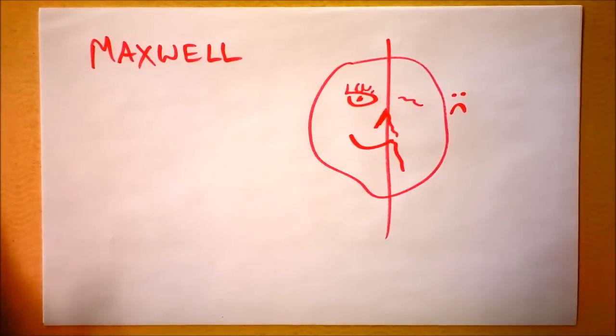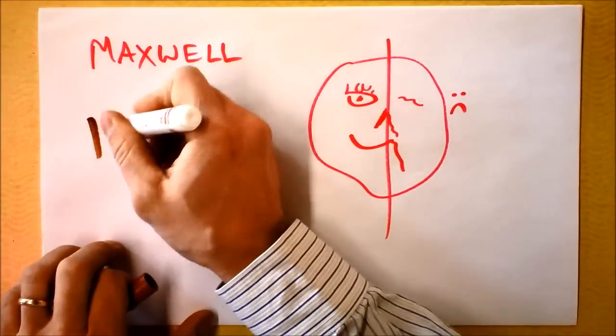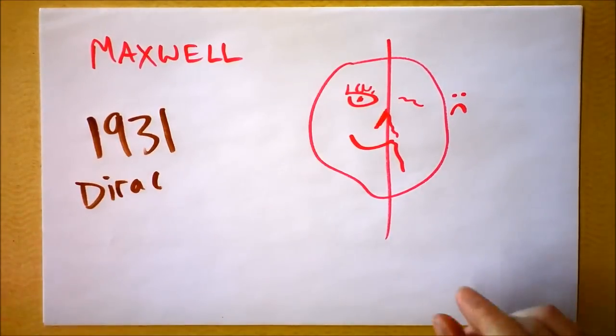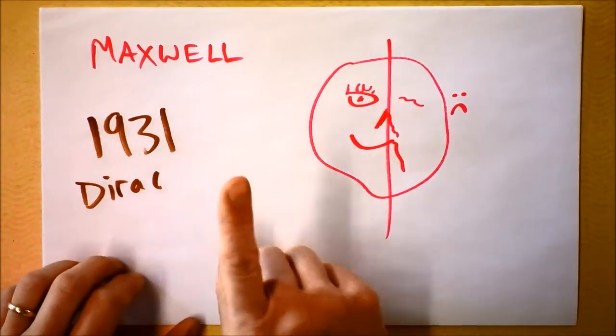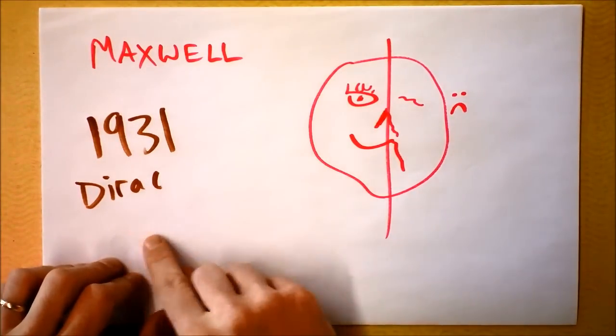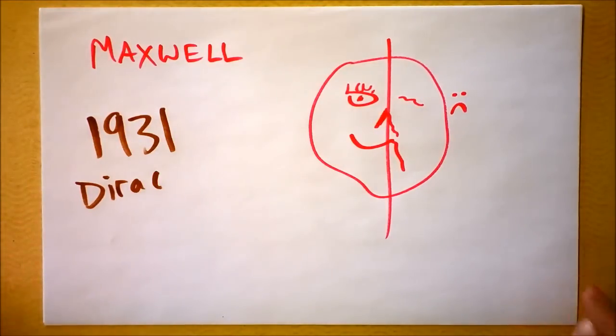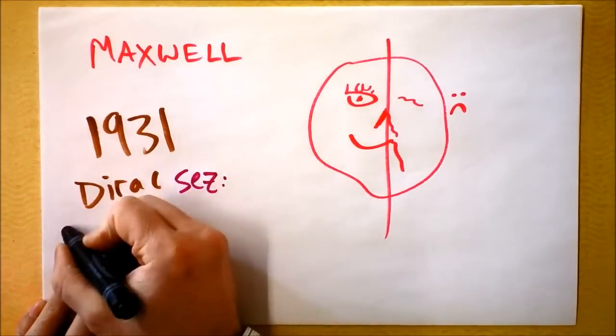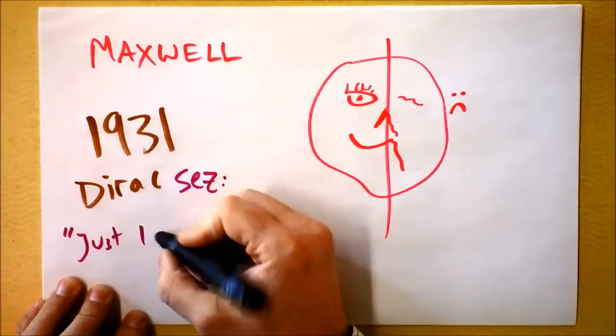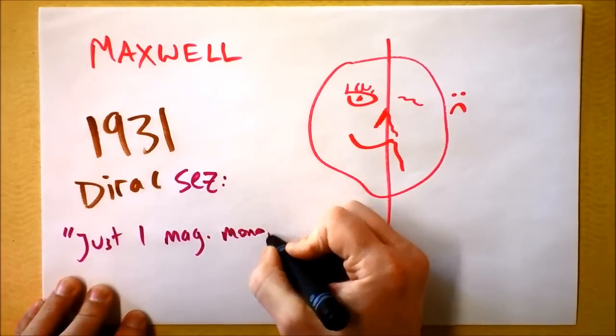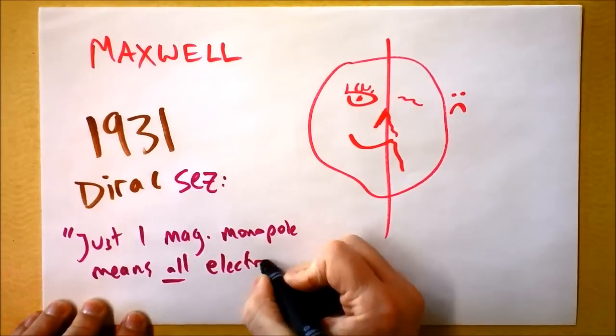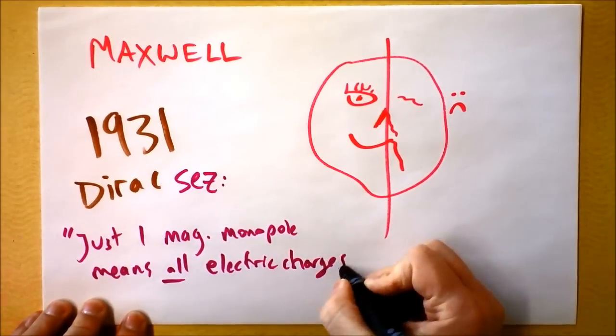So here's the thing. If we also, you guys remember Paul Dirac, right, Dirac says in 1931, he says, hey, it would be really cool if there were magnetic monopoles somewhere in the universe because just a single magnetic monopole means that all electric charges would be quantized. Why would that be fun? Well, let's write down what Dirac says. Dirac says, here he goes. Just one magnetic monopole means all electric charges quantized.